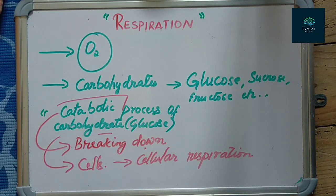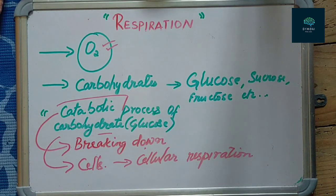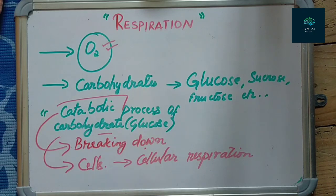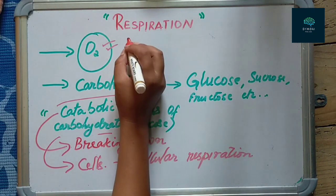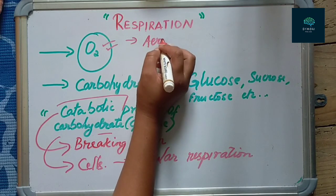Cellular respiration is the breaking down of glucose. It occurs in cells and involves oxygen. This type is referred to as aerobic respiration.